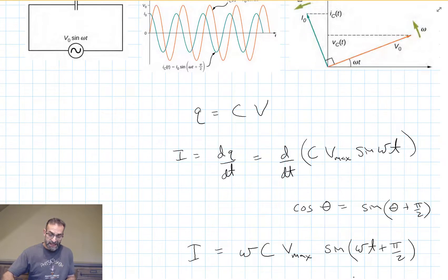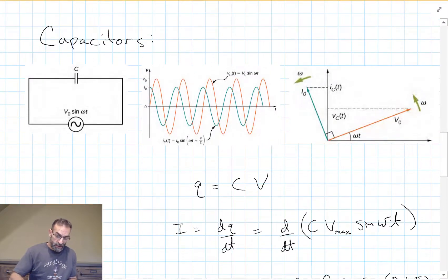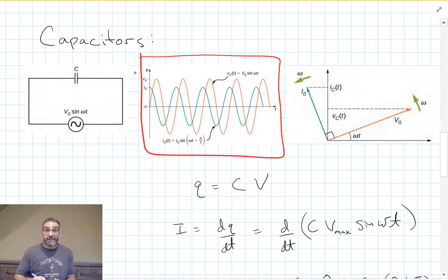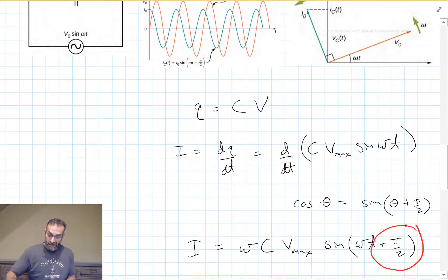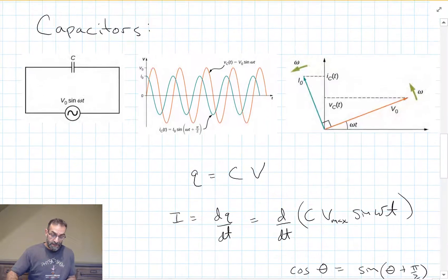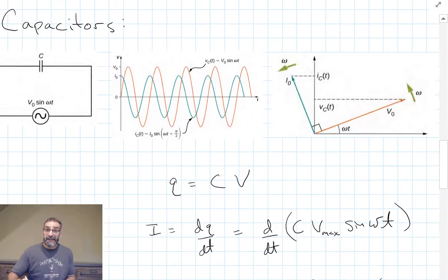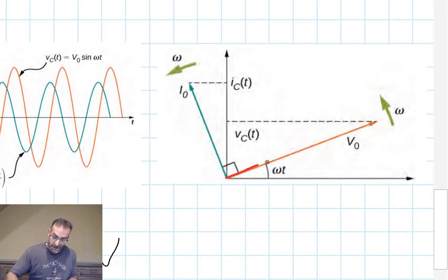So for the capacitor, we get a graph that looks like this. The voltage and the current don't hit their maximum values at the same time. They are shifted. We say that the current leads the voltage because we have this plus pi over 2 here. We say it leads the voltage. And if we draw them in a phasor diagram, the voltage points in this direction. And our current leads by 90 degrees. It's 90 degrees ahead of the potential.